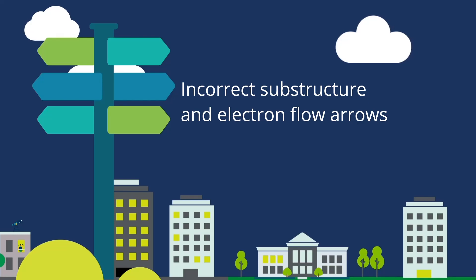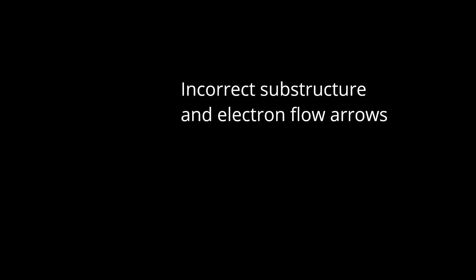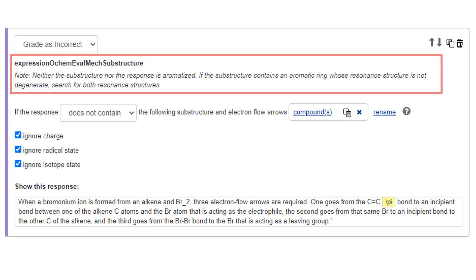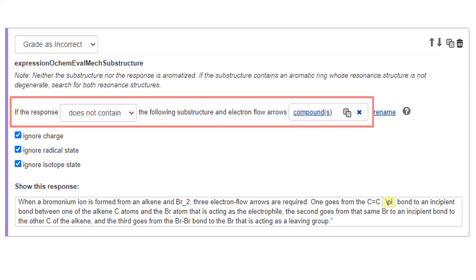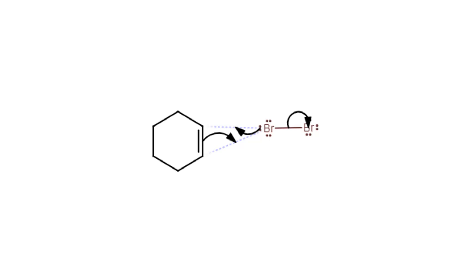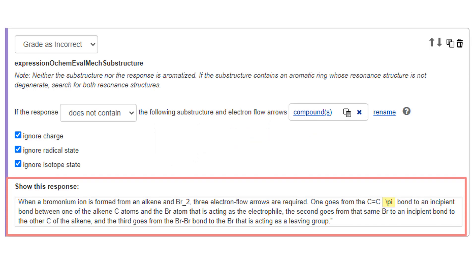Check for incorrect substructure and electron flow arrows: Select Add Evaluator and choose Expression ochem_eval_mech_substructure. Create the phrase: 'if the response does not contain the following substructures and electron flow arrows.' Create the substructure. Enter the feedback: 'When a bromonium ion is formed from an alkene and Br2, three electron flow arrows are required. One goes from the C=C pi bond to an incipient bond between one of the alkene C atoms and the Br atom acting as the electrophile. The second goes from that same Br to an incipient bond to the other C of the alkene. The third goes from the Br-Br bond to the Br that is acting as a leaving group.'